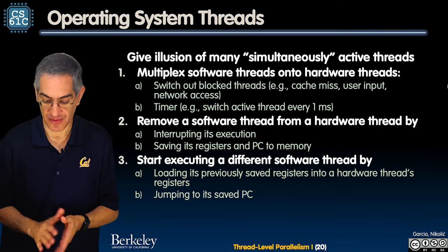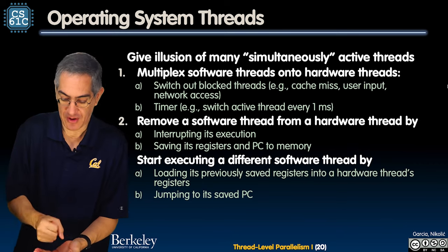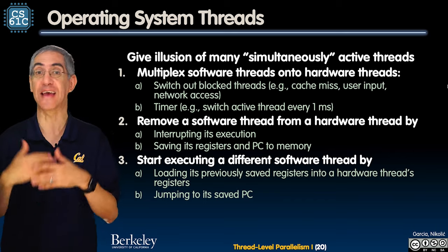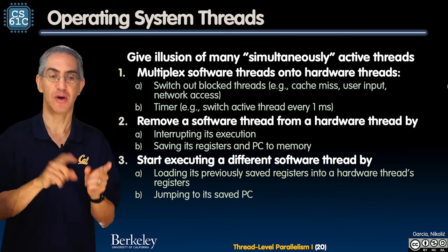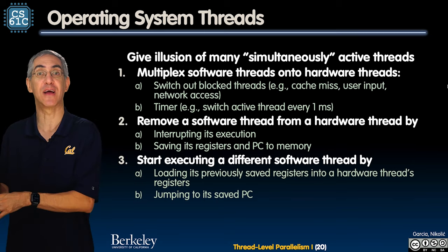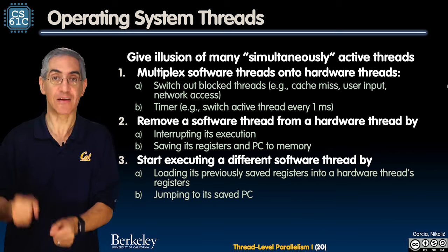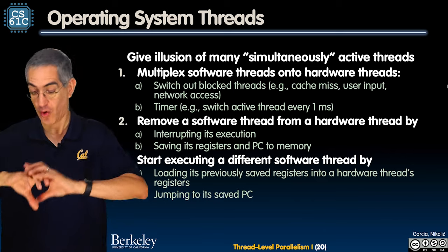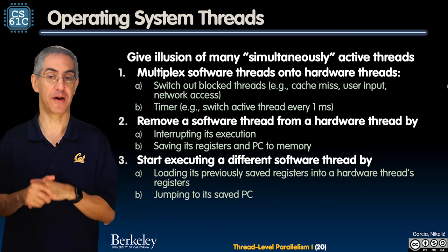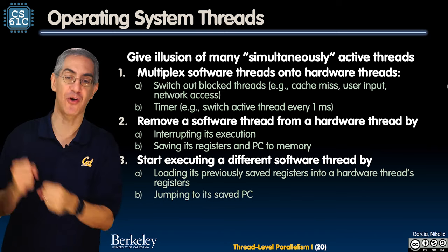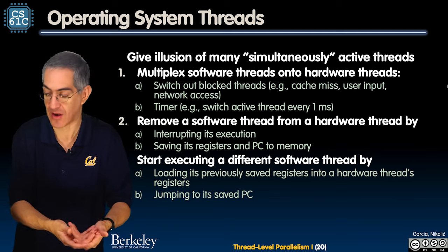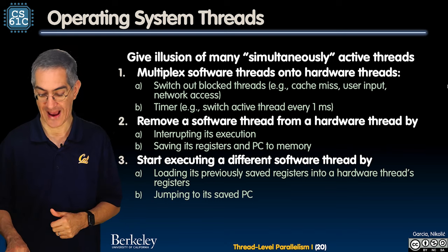How do you remove a software thread from a hardware thread? You interrupt execution, stop it running, and save its state — save its registers and PC to memory. Then to start a different software thread, you go to memory, grab its previously saved registers, load them into the hardware registers, jump to its saved PC, and keep going. Registers and PC are what's needed — pull it out, pull another in. That's the mechanism for switching software threads on and off hardware threads.